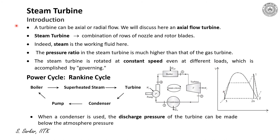Let me present you about the introduction of a steam turbine. Please note that a turbine can be of axial or radial flow machines. However, here we will restrict to the axial flow steam turbine. Steam turbine consists of rows of nozzles followed by the rows of rotating blades. Indeed, the steam is the working medium here. Furthermore, the pressure ratio in a steam turbine is much higher than that of the gas turbine.